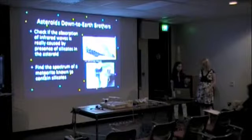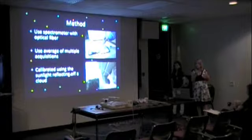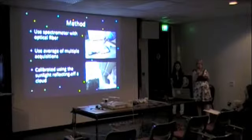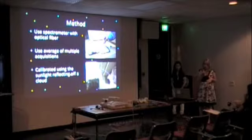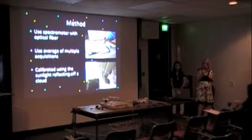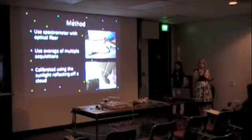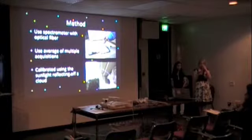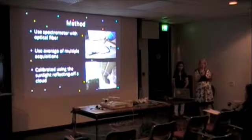For the meteorite analysis, we used a spectrometer with an optical fiber to find the spectrum. We took the average of multiple acquisitions and calibrated using sunlight reflecting off of a cloud — the same approach used earlier with the Sun and asteroid, just replacing those objects with the cloud and the meteorite.